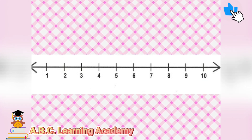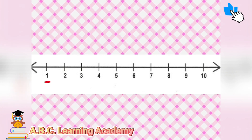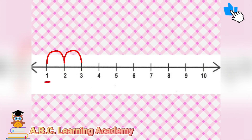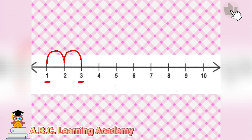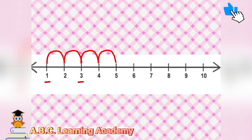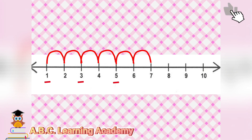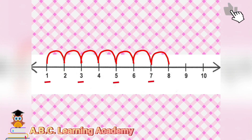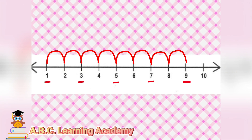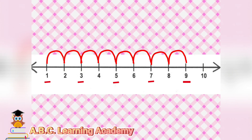This is another example. This time we're going to start at number 1. Then we need to jump forward 2 times. 1, 2 — we reach number 3. Then let us jump another 2 times. 1, 2 — we reach number 5. 1, 2 — we reach number 7. Jump again. 1, 2 — we reach number 9.